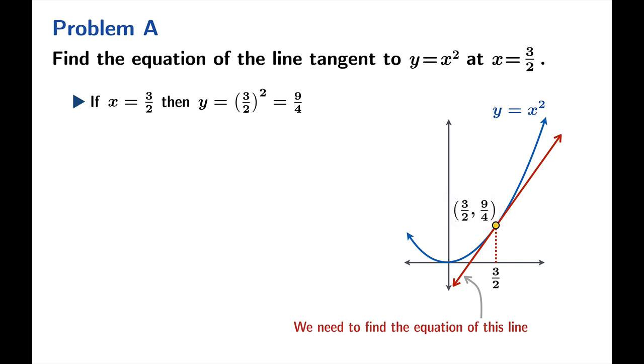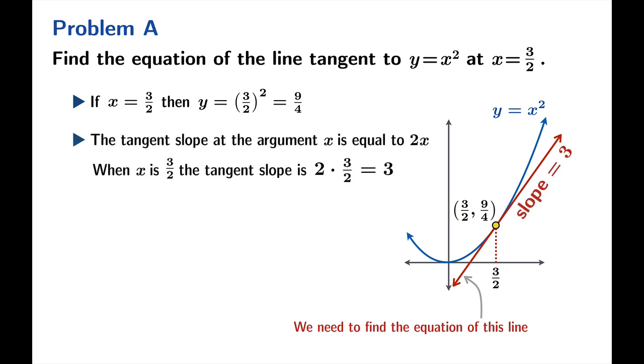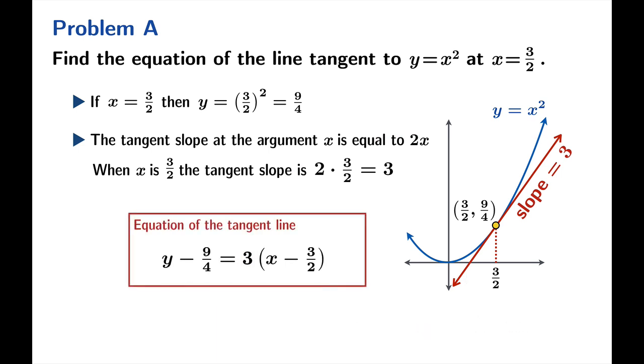All we need now is the slope, which is the tangent slope. But we've just seen that the tangent slope at x is twice x. So when x equals 3 halves, we're talking about a tangent slope of 3. Now we can use point slope form. We plug in the x coordinate and the y coordinate of the point known to be on the line and the slope, and there is our equation of the tangent line.